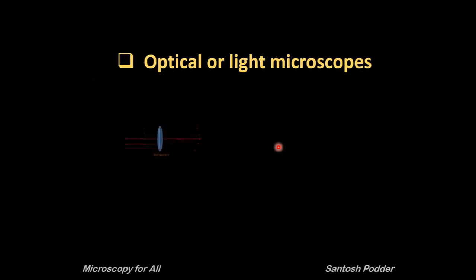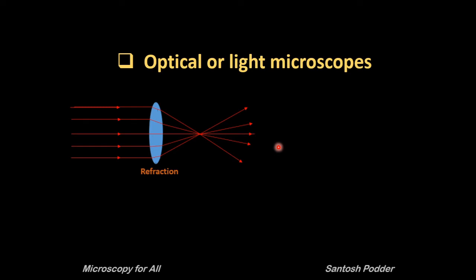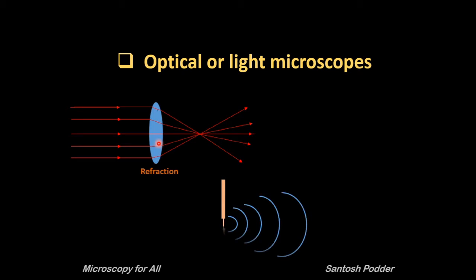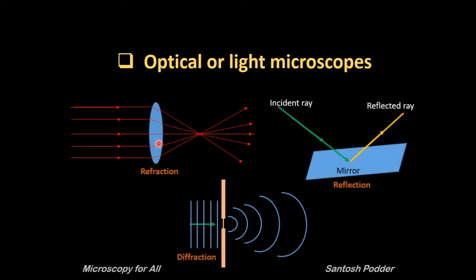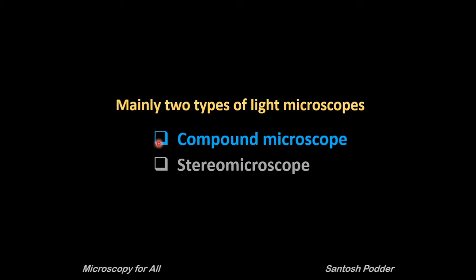Optical or light microscopes commonly use visible light and a system of lenses. They use different properties of light such as refraction, diffraction, and reflection to generate a magnified image of a small object so that you can see it. There are mainly two types of light microscopes: compound microscopes and stereo microscopes.